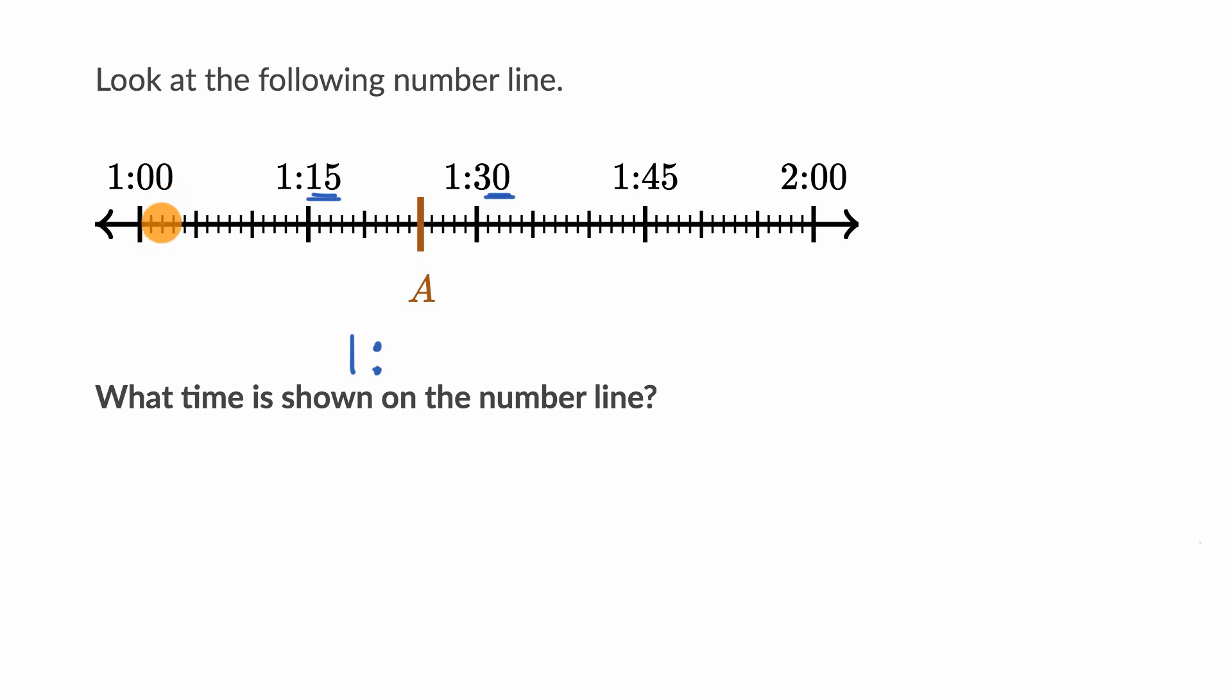One way to tell is if you look at each of these tick marks, it looks like they represent a minute. Let's count. If we start at one, we go to one o'one, two, three, four, five, six, seven, eight, nine, ten, eleven, twelve, thirteen, fourteen, fifteen. Yep, it looks like each of these tick marks is a minute. So we just have to figure out how many tick marks past one fifteen.